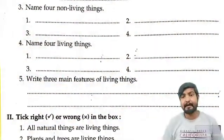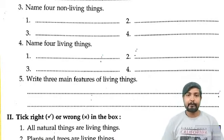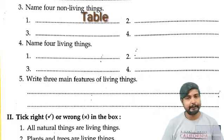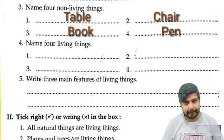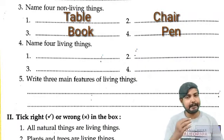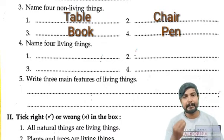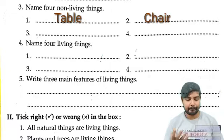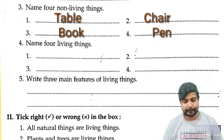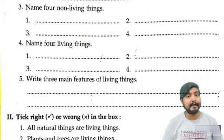Number 3: Name four non-living things. The answer is: table, chair, book, pen. Jis ke andar jaan nahi hoti, unke naam hain table, chair, book, pen. Aur bhi kai saari cheezein aap log likh sakte ho.